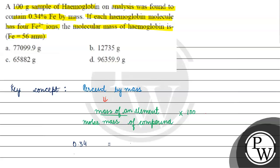What is our mass? Look, we have a molecule, a hemoglobin molecule. There are 4 ions. So what is the mass? 4 into 56 into 100. Right?